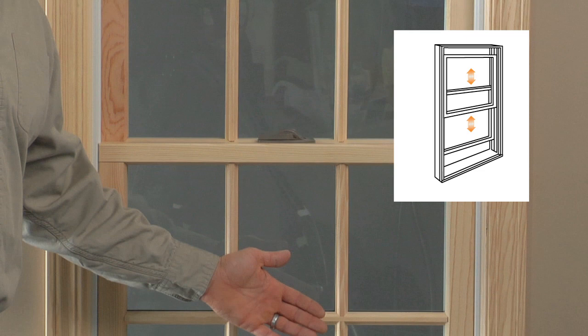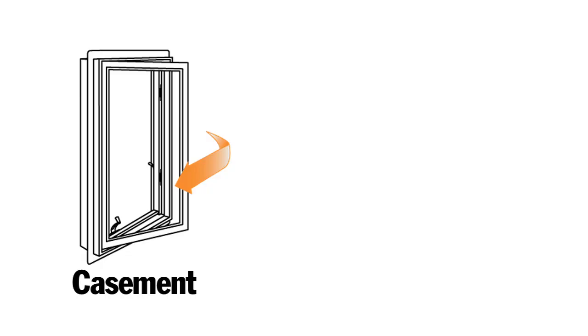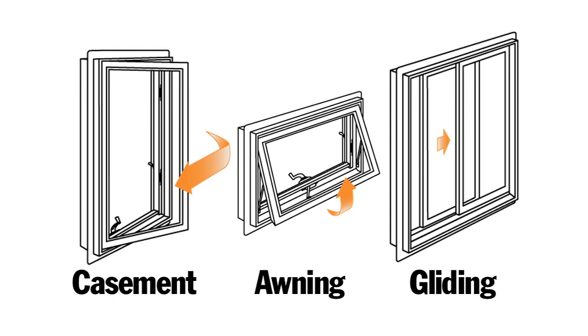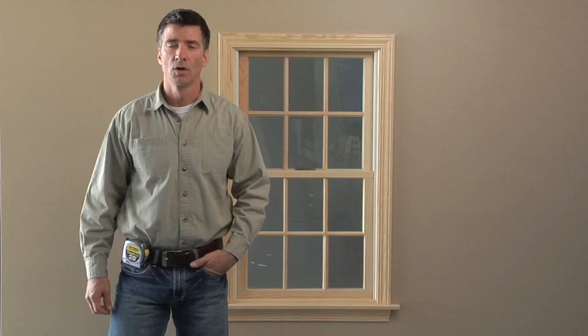Next, we need to determine what type of window you have. A double hung, like this one here, has a top and a bottom sash that move up and down. Casement windows have hinges at the side and open outward. Awning windows have hinges at the top and open outward. Gliding windows have panels that slide horizontally.